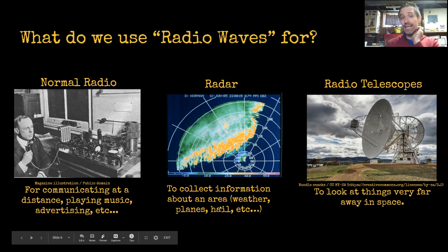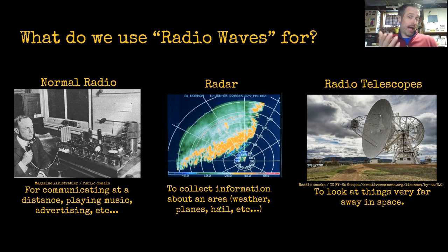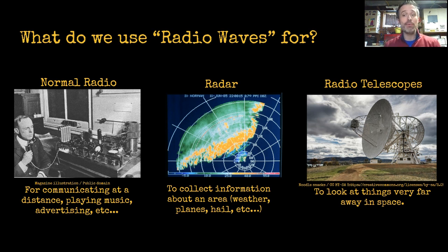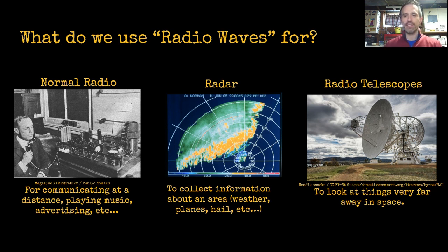We collect information about an area — like weather, where planes are, where boats are, where clouds are, where hail is — through radar. It's sending out radio waves into the surrounding area, and some of those radio waves get bounced back. When they get bounced back, we know that something's out there — very much like bats do with echolocation, but we send out radio waves. And with radio telescopes, we can actually receive radio waves from space and make pictures of things that our eyes can't see — looking very far away, maybe through clouds or dust in space.